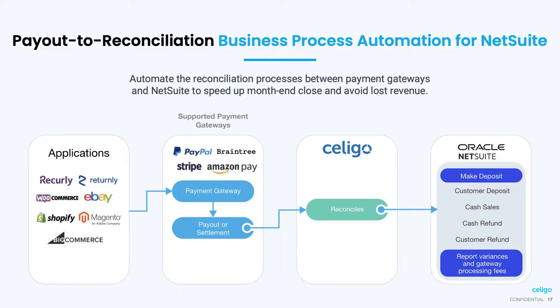The automation looks at the Payment Transactions Report, identifies or creates the matching record in NetSuite, creates a deposit record, matches it with bank records, and closes all transactions associated with it.